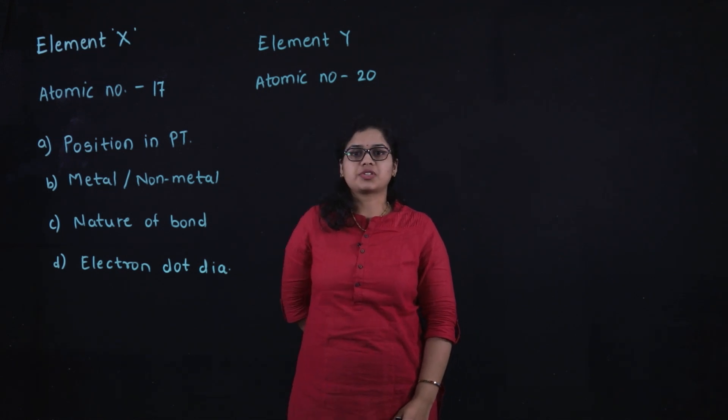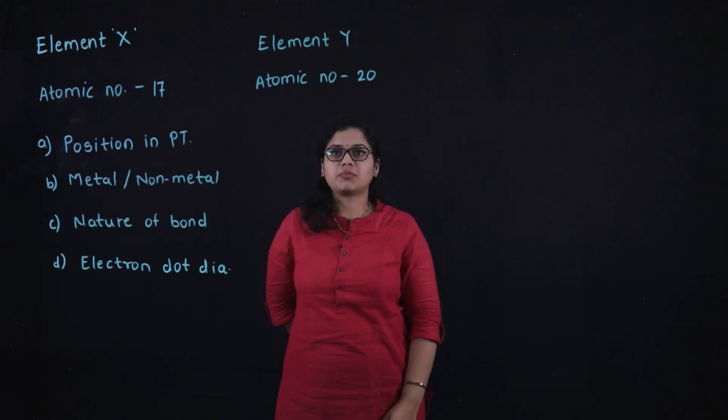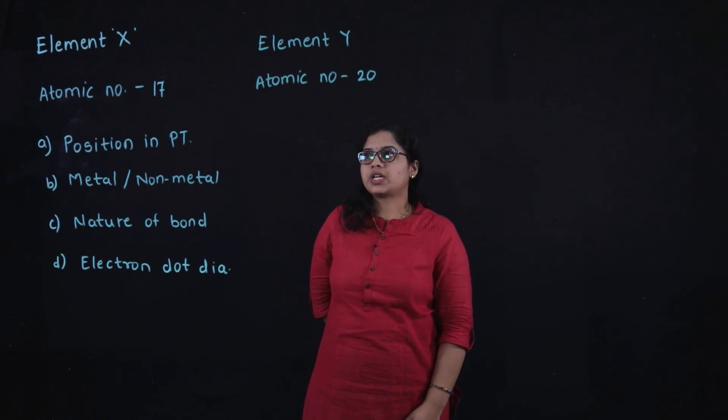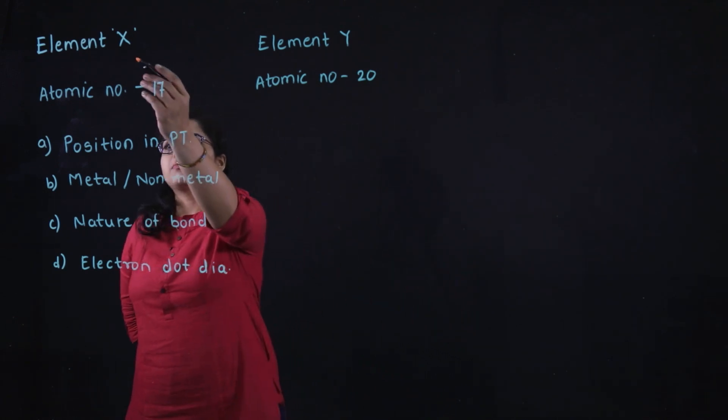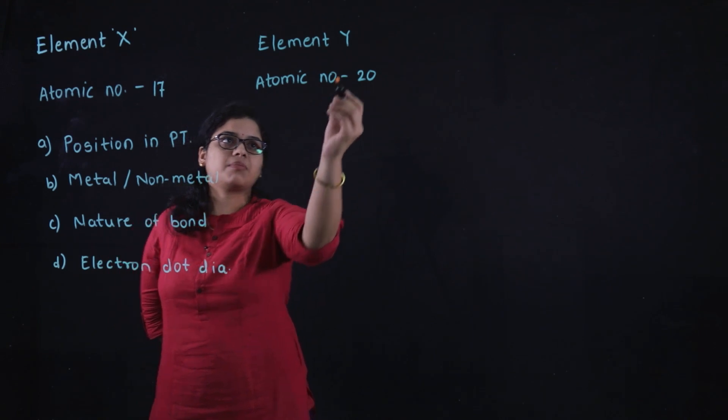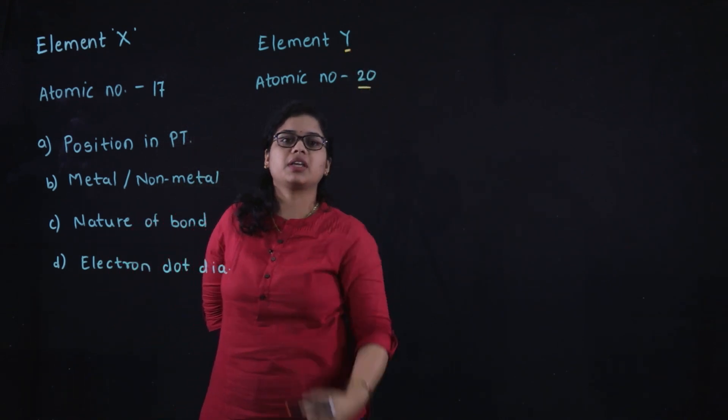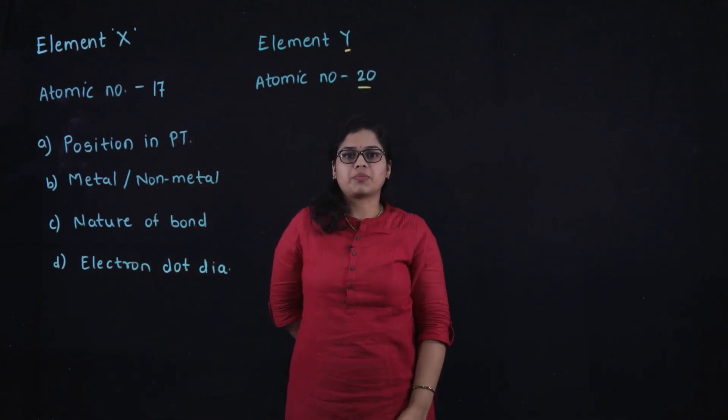Let's see the question which is based on the concept of electronic configuration and bonding in the elements. It is given that element X with atomic number 17 and element Y with atomic number 20 react with each other to form divalent halide.